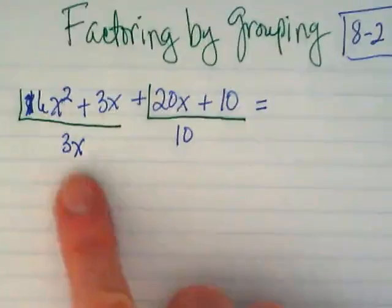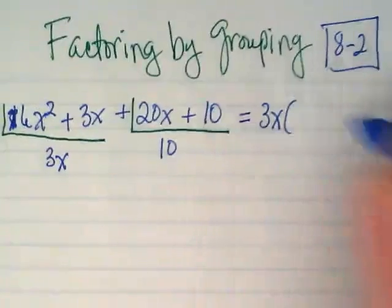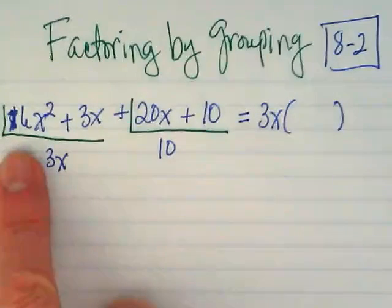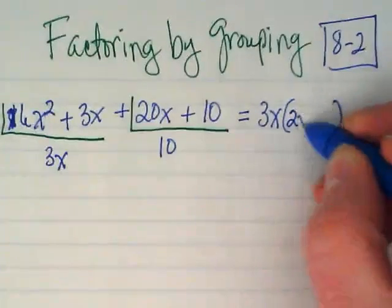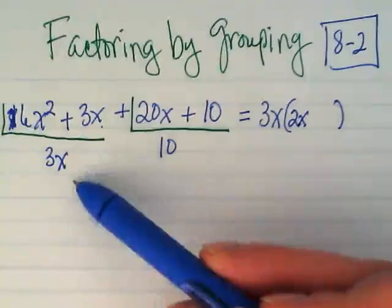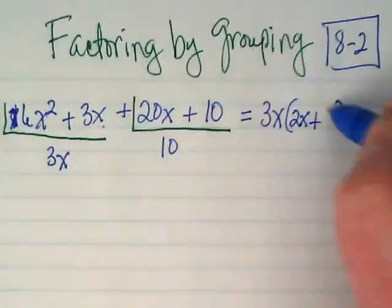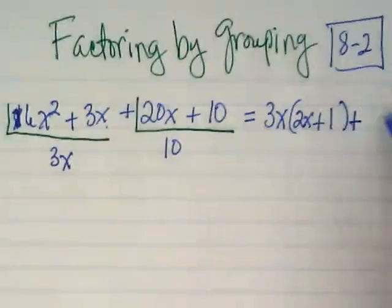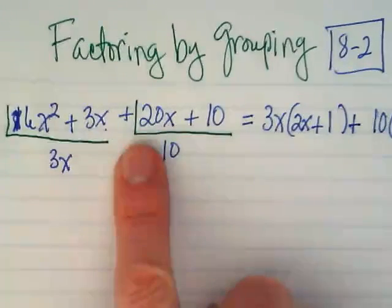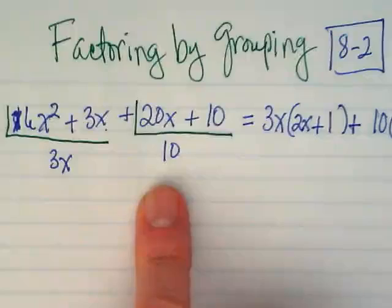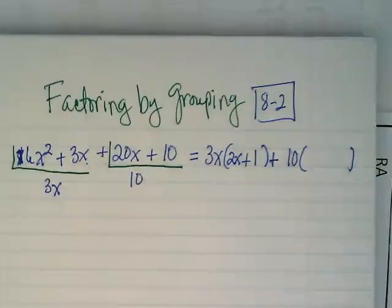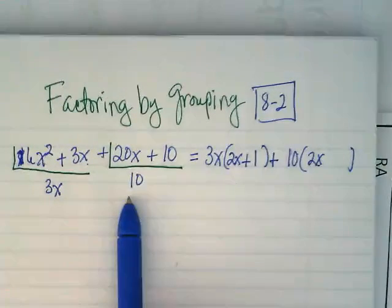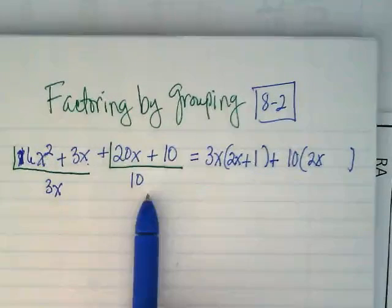We're going to rewrite this by taking what we're dividing out of the first one, and we're going to divide it from both terms. What is 6x squared divided by 3x going to be? 2x. And 3x divided by 3x? 1. So this is 2x plus 1. Plus the 10. And then another set of parentheses where we divide the 10 from these two terms. What's 20x divided by 10? Oops, I'm off screen. Let me zoom out a little bit. Yep, it's going to be 2x. 20 divided by 10 is 2, and there's no X to divide out. 10 divided by 10 is 1.